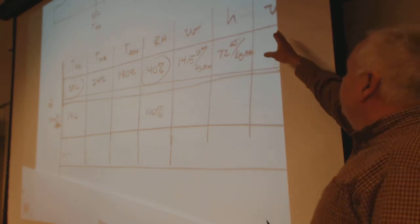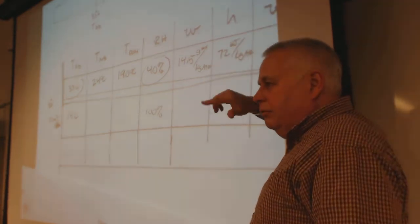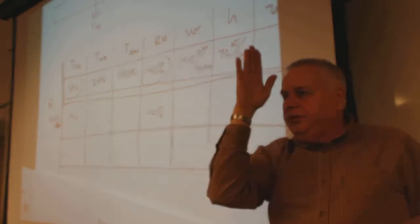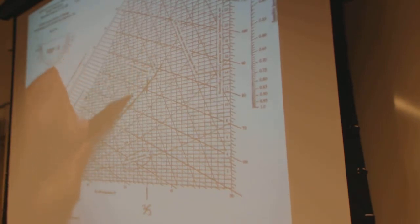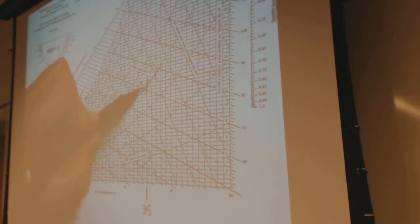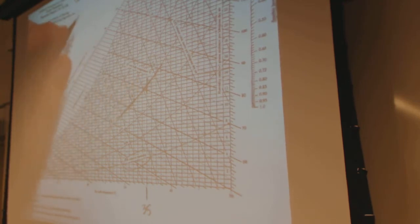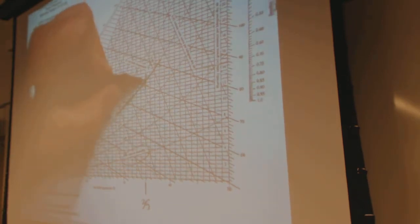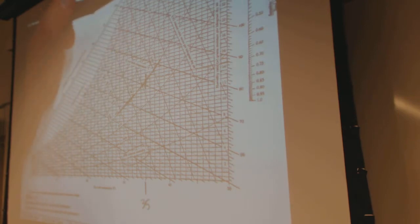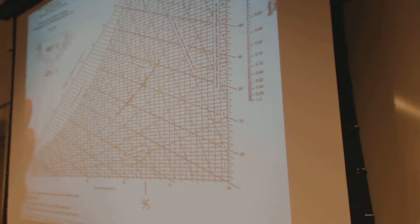The specific volume lines: we're between a line at 0.90 and one that must be 0.89, closer to 0.89 than to 0.90. It doesn't look halfway, so I'll call it 0.893. And that is in meters cubed per kilogram.